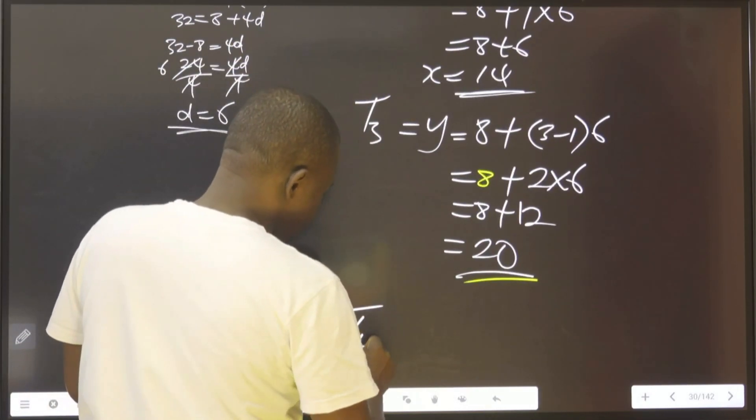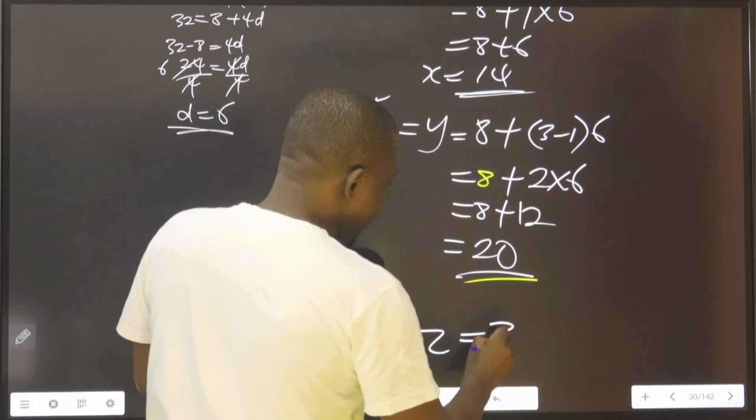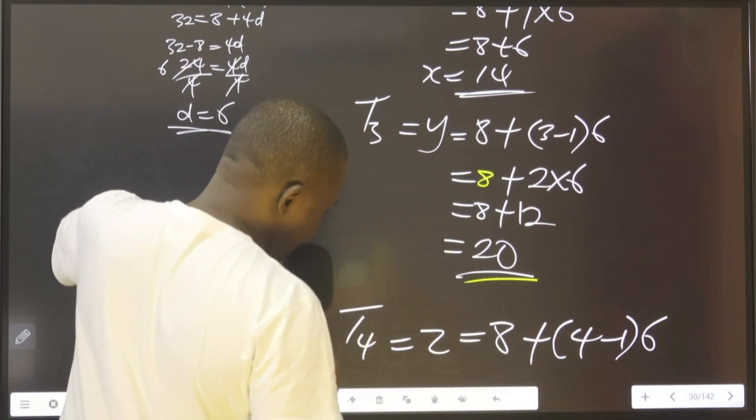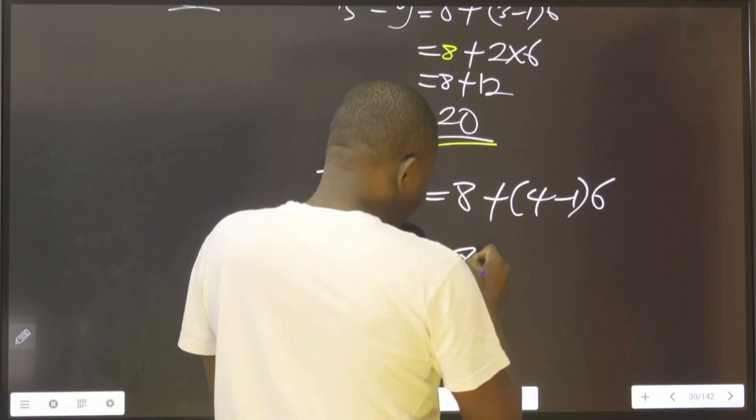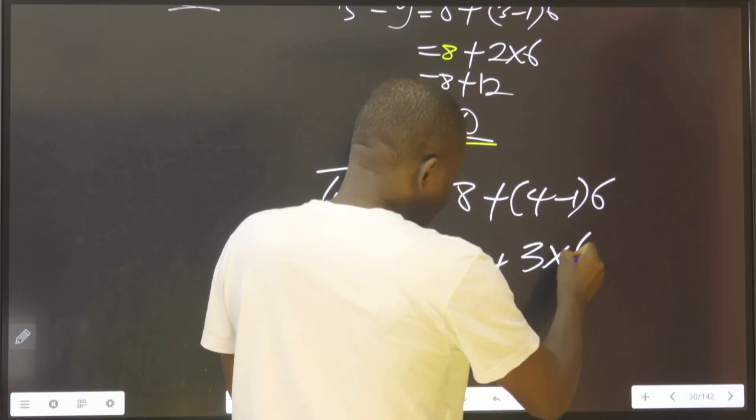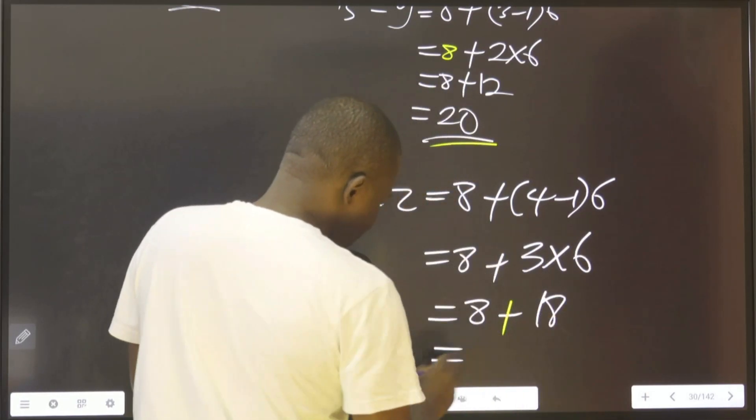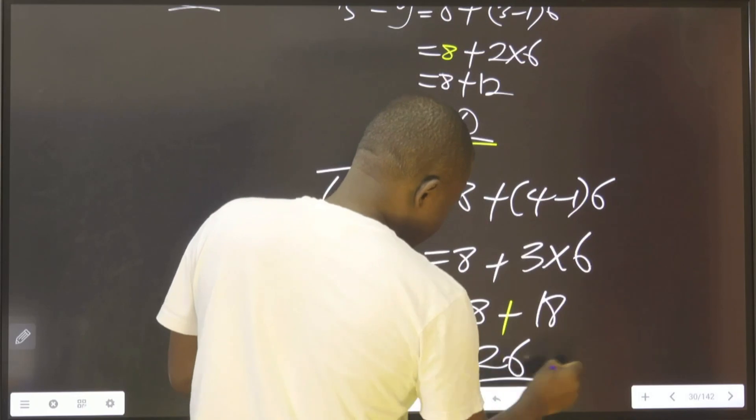The fourth one, which is z, is equal to 8 plus 4 minus 1, we put 6 here. It means therefore it's 8 plus 3 multiplied by 6, which is equal to 8 plus 18, which equals 26. So 26 is our z.